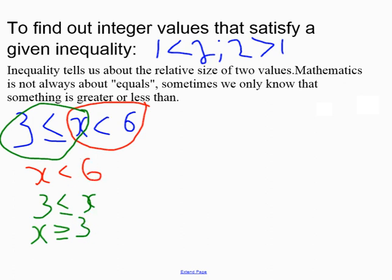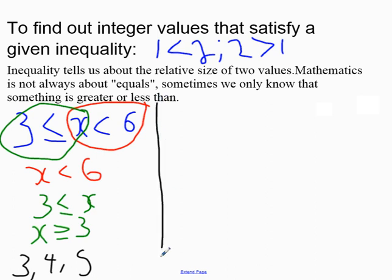So the numbers are 3 itself, because it has to be greater than or equal to 3, then 4 and 5. Because the number has to be less than 6, we stop at 5.